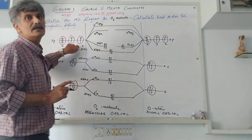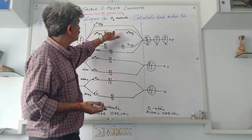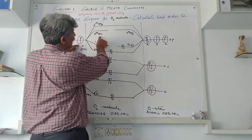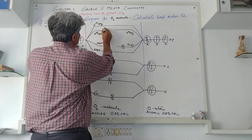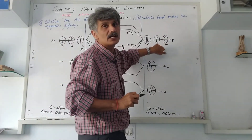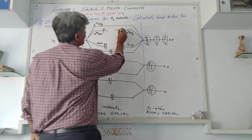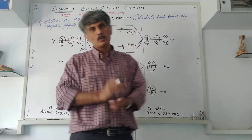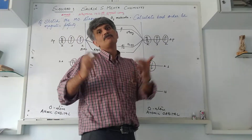One more electron remains — in 2pz of the oxygen atom. It again has three options. According to the three principles, it gets filled into pi star 2px (anti-bonding). Then the 2pz electron of the other oxygen atom compulsorily goes into pi star 2py, according to Hund's rule — equi-energetic orbitals get filled equally. This is the twist in filling up electrons for the oxygen molecule, and this is why molecular orbital theory is much superior to valence bond theory.